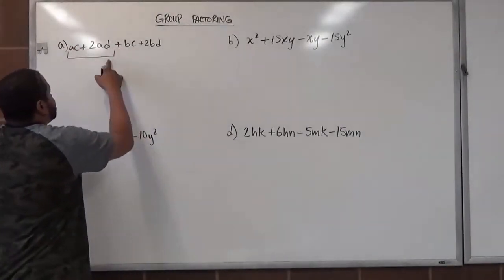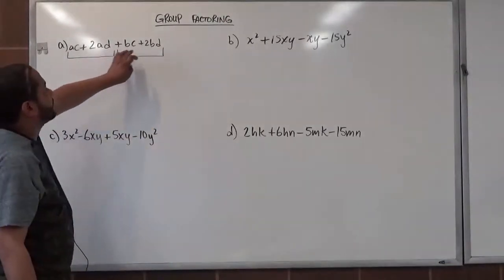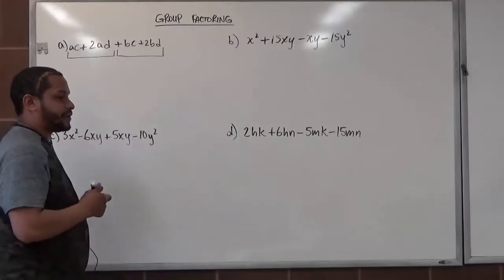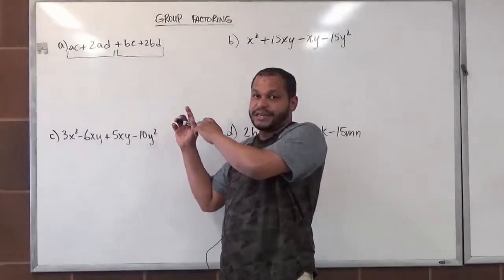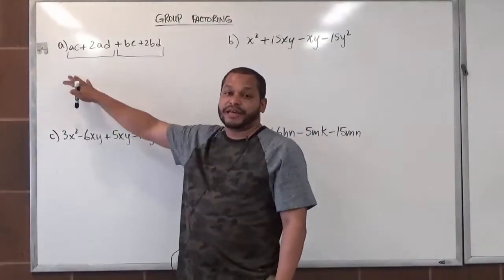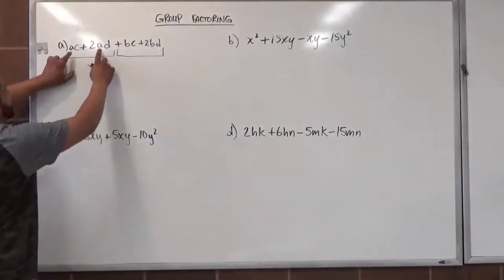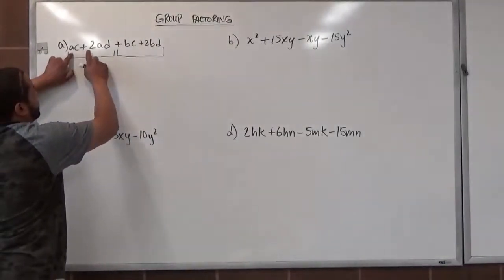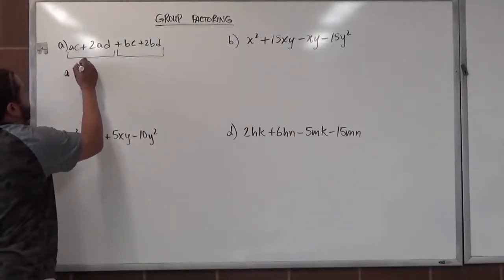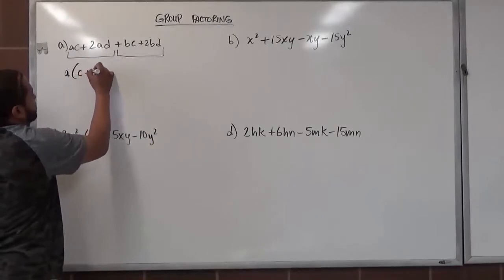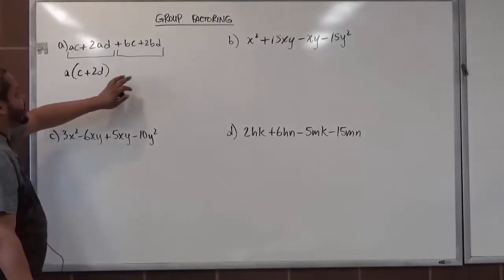These two are going to be our first set and our second set. Before we begin, we want to make sure that they have common factors in each set. Usually when you find a common factor within the two sets, if it's factorable, you'll find that both factors have something left over that is common between both sets. In our first set we have AC plus 2AD, and the common factor is just A. When we factor out A, what we have left over is C plus 2D. We're looking to get A or C plus 2D in the second set as well.